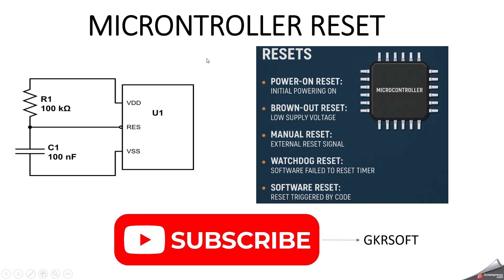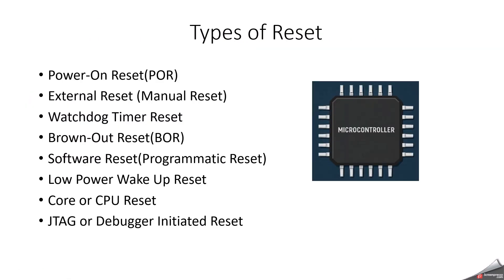Now we can look at the types of reset available in microcontrollers. The first one is power on reset; second is external reset, also called manual reset; third is watchdog timer reset; fourth is brownout reset; fifth is software reset, also called programmatic reset; sixth is low power wake up reset; seventh is core or CPU reset; and the final one is JTAG or debugger initiated reset.